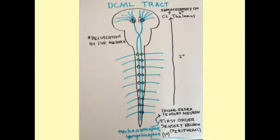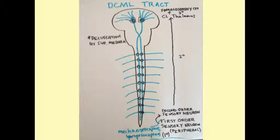The DCML tract is a sensory tract that travels from the periphery to the brain. A first-order sensory neuron conveys the signal from the site of sensation through the posterior horn of the spinal cord, synapses, then travels up the posterior column, and decussates at the superior medulla. From there it continues to the contralateral thalamus, synapses as a third neuron, and finally travels to the somatosensory cortex. The DCML tract is responsible for fine touch and proprioception.